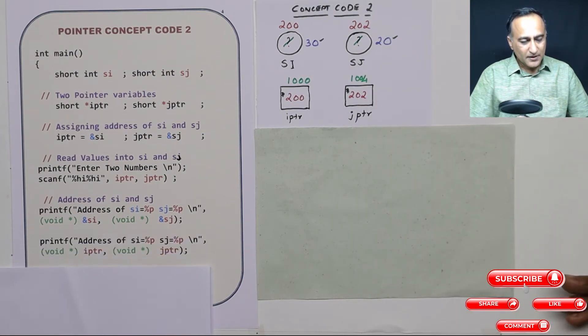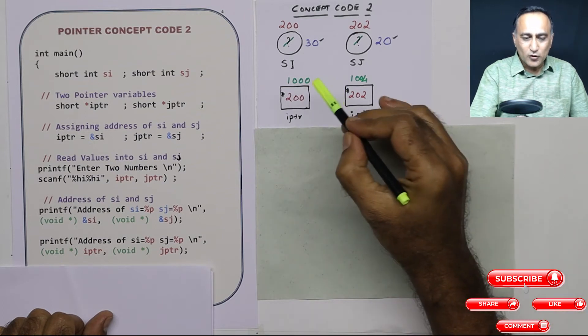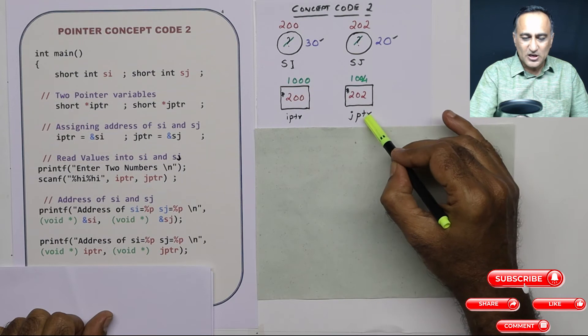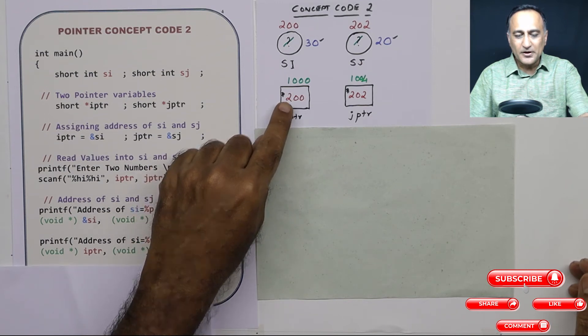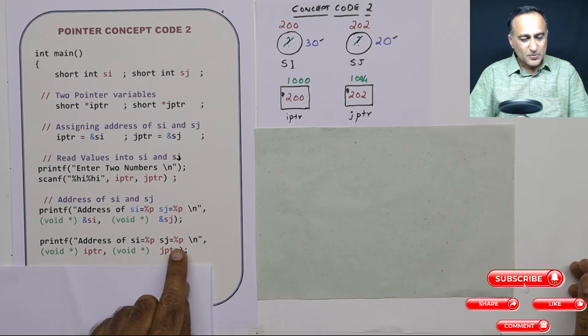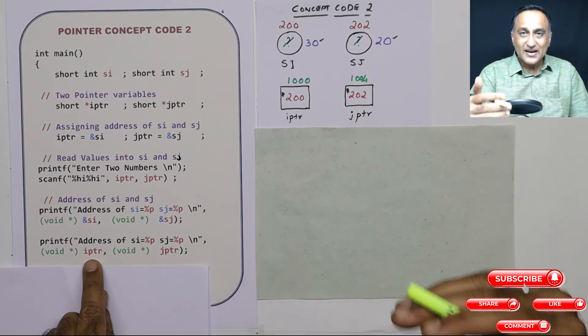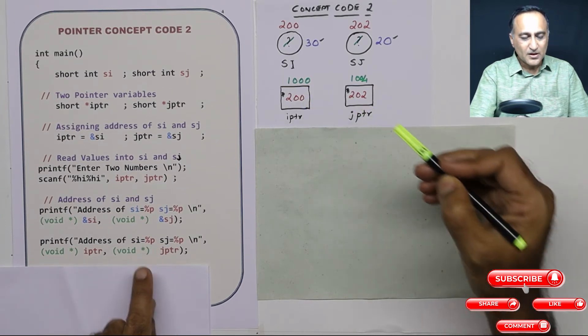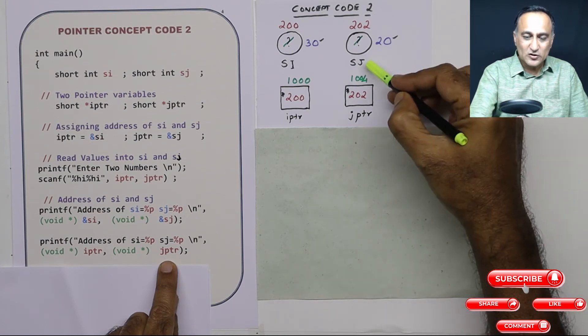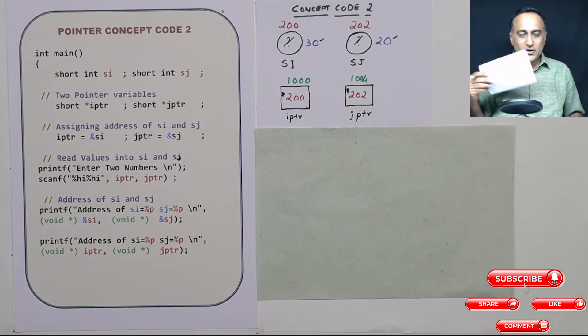Now I am printing address of SI and sj using a different method. I know that IPTR contains the address of SI, JPTR contains the address of sj. So if I simply say print IPTR it will print 200. When I say %p %p, when I say print IPTR, why I am using %p? Because IPTR contains address. So when this printf statement is executed, what is the content of IPTR? It is 200 and 200 happens to be an address. That's why it is %p. What is JPTR? It is also address, the address of sj. So it will print 202 using this %p conversion specifier.